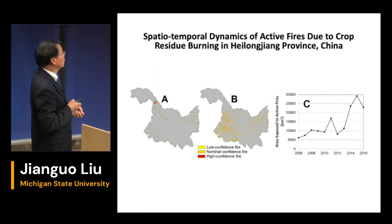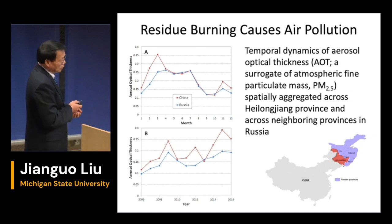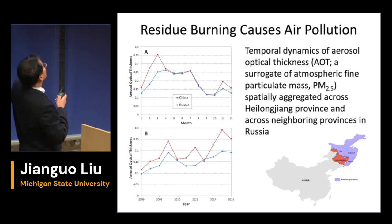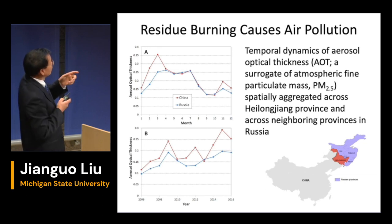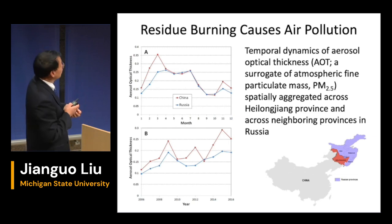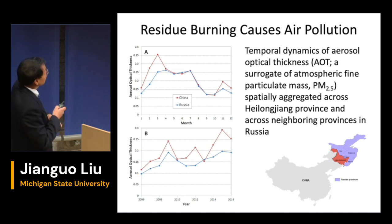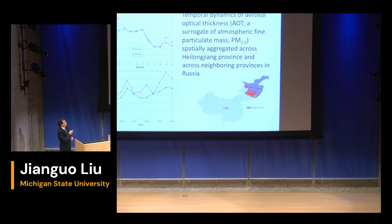The area exposed to active fires has increased over time as well. For air pollution, we use aerosol optical depth as a proxy or surrogate for air pollution — specifically fine particulate matter PM2.5. You can see seasonal changes on a monthly basis. The red line represents the area in China and the blue line the area in Russia — they are more or less correlated.